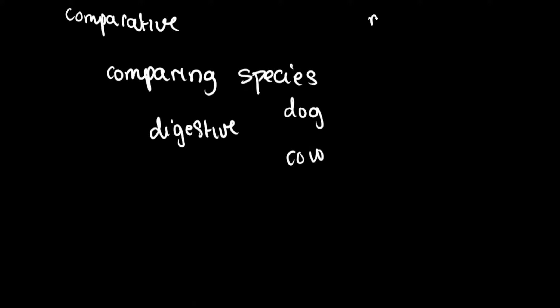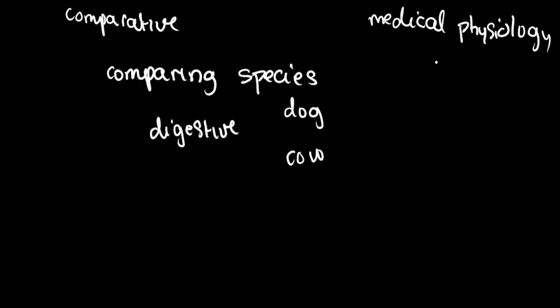The next branch of physiology we'll consider is medical physiology, which involves the study of human physiology — the functions that take place in humans. A sub-branch of medical physiology is pathological physiology, where we study how normal functions can be affected by diseases. Physiology itself is the study of normal function, but we need a good understanding of the normal in order to grasp abnormal situations caused by pathogens or diseases.